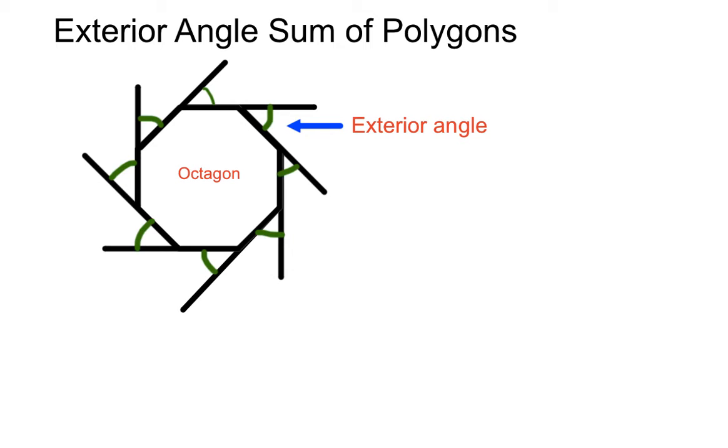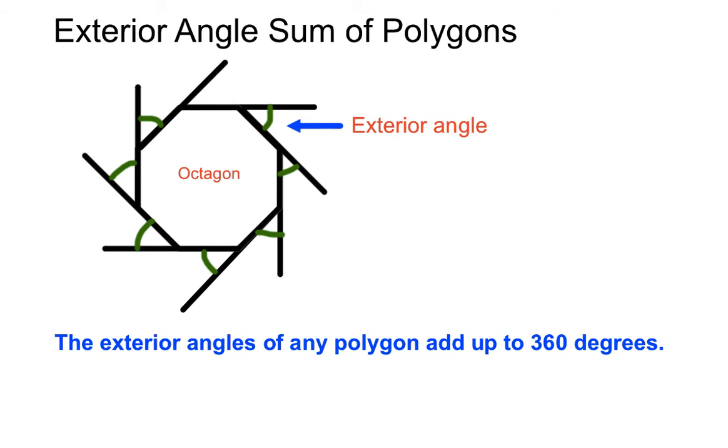And so for an octagon, the exterior angles of that polygon adds up to 360 degrees. So we saw for a pentagon, even works for a rectangle or even a triangle, you get the exterior angles all adding up to 360 degrees. Crazy.